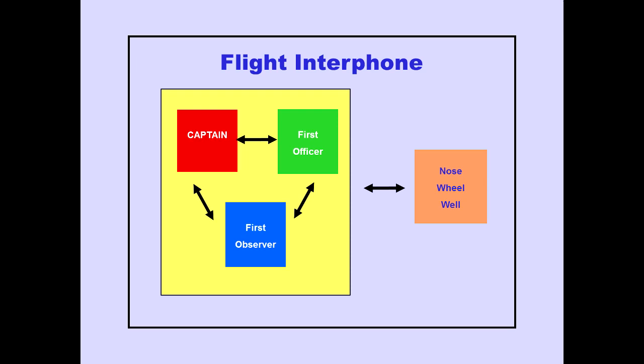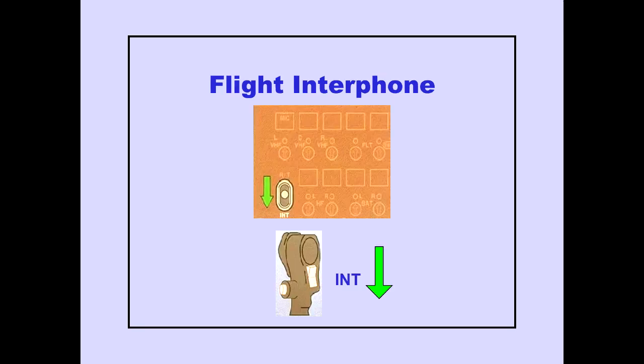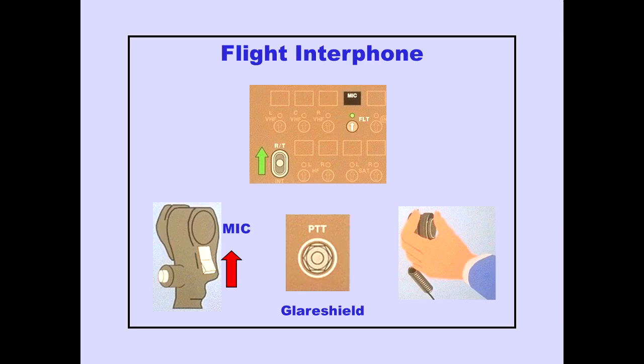The flight interphone is for flight deck intercommunication. There is also a flight interphone jack in the nose wheel area. The flight interphone is used by pressing either push-to-talk switch to interphone, or by selecting the flight transmitter selector and using the RT or mic position of a push-to-talk switch, or you can use the hand microphone.